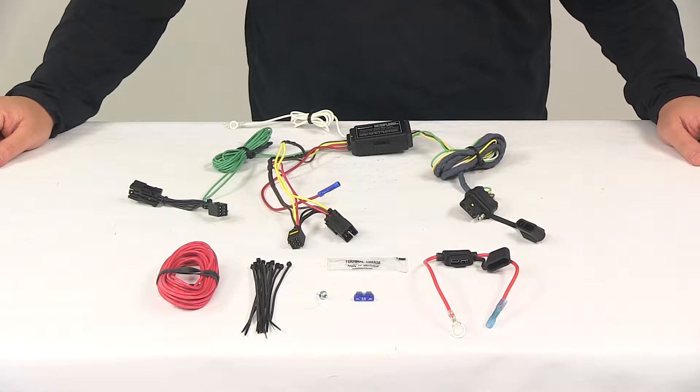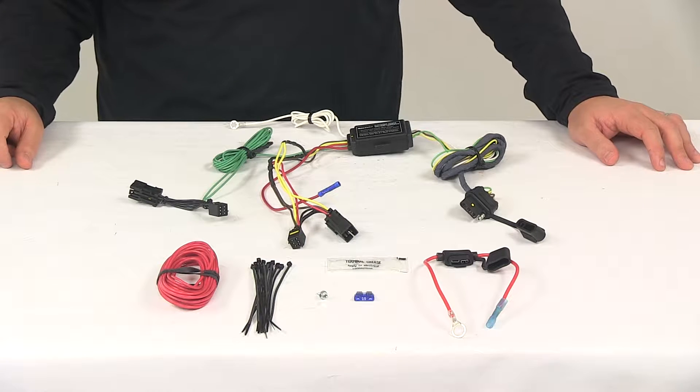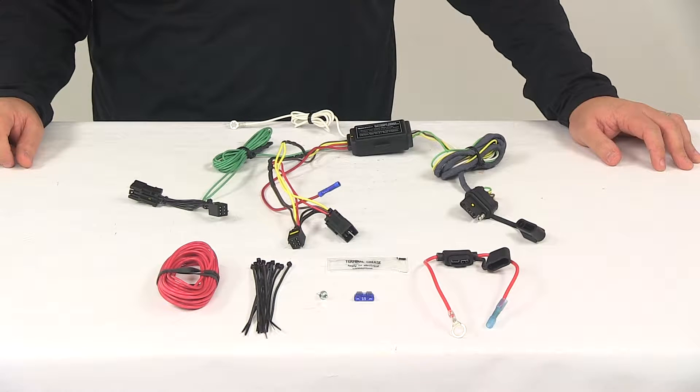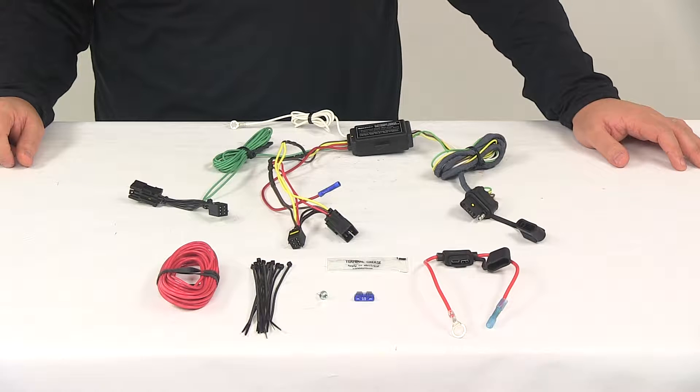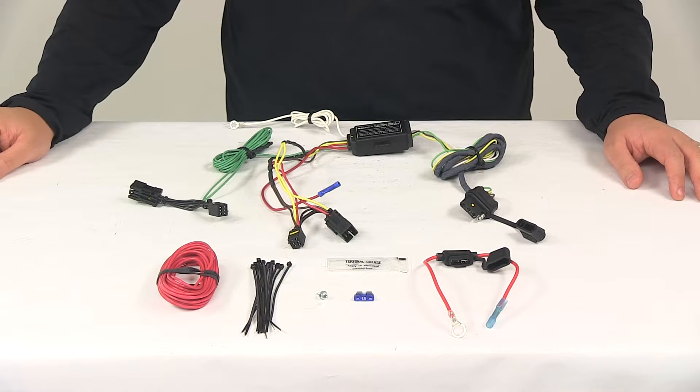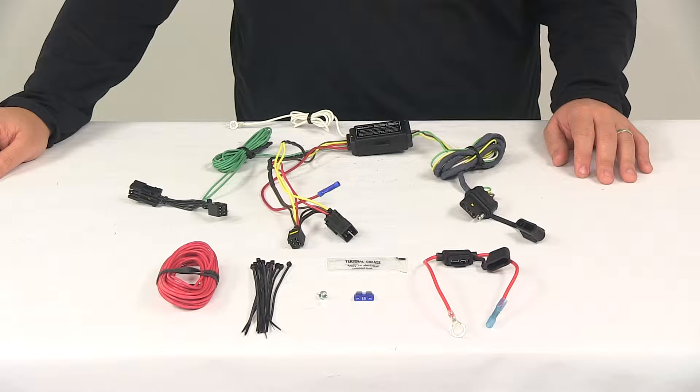Today we're going to be taking a look at the Hopkins plug-in simple vehicle wiring harness with a four pole flat trailer connector. This product fits certain years of the Chevrolet Captivus Sport. You can use the vehicle fit guide located at eTrailer.com to ensure that this is a fit for your vehicle.